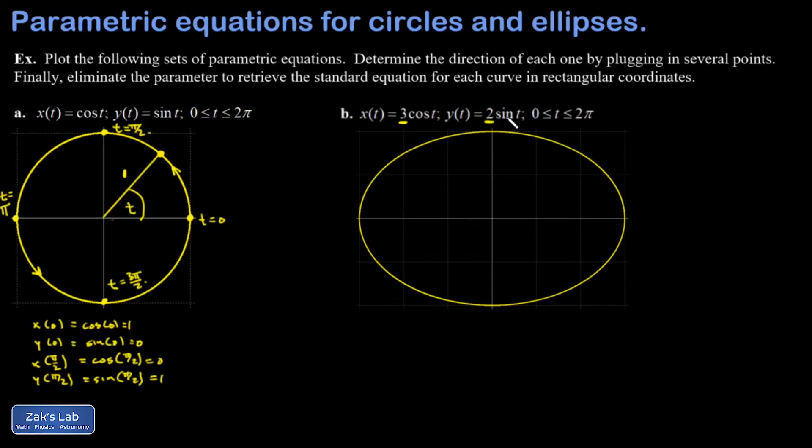Aside from that, it's really just as simple as plotting a circle. So again, if I plug in some points explicitly, x of zero is three cosine of zero which is three, y of zero is two sine of zero which is zero. I end up with the point three zero happening at t equals zero.